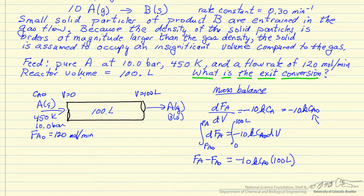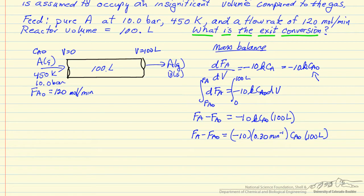Now we know the values of these constants, so we're going to put those in, but we still need the value for the concentration of A. We can get that from the pressure and the temperature and the ideal gas law.